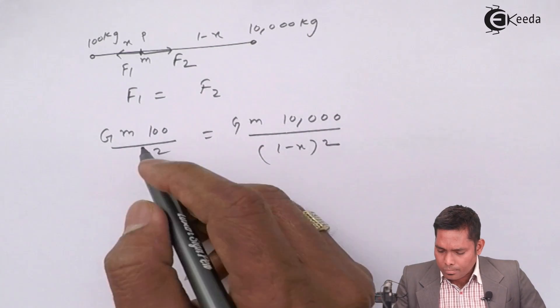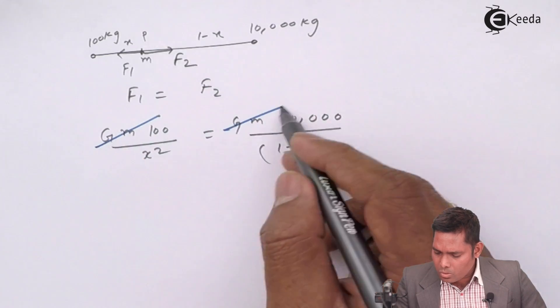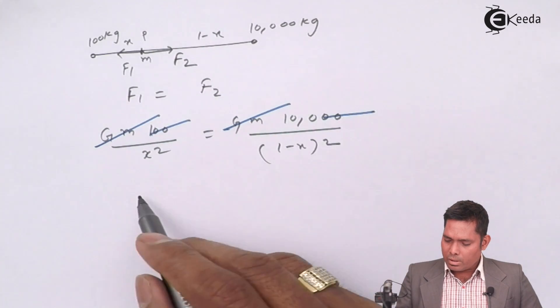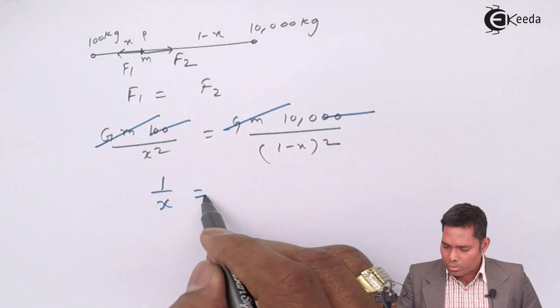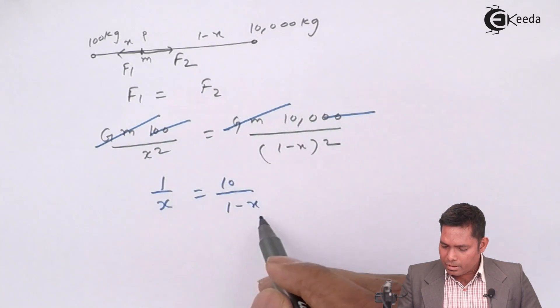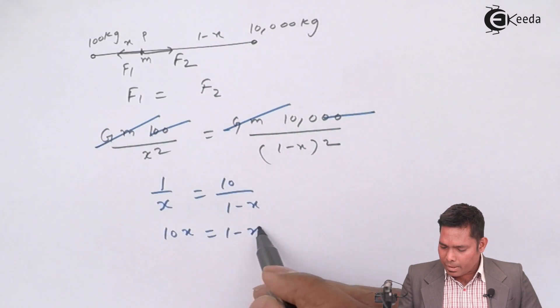Gm will cancel out, 100 and two zeros cancel out. If I take the square root of both sides, 1 over x equals 10 divided by (1 minus x). Cross multiply: 10x equals 1 minus x.